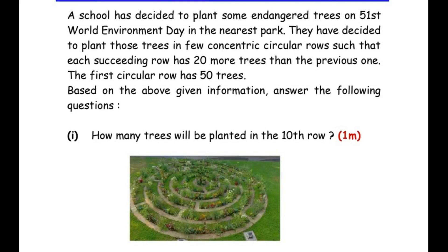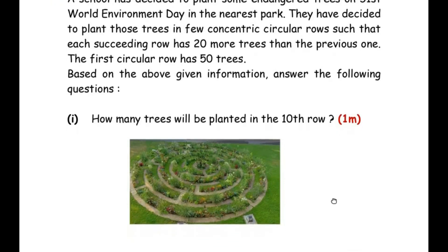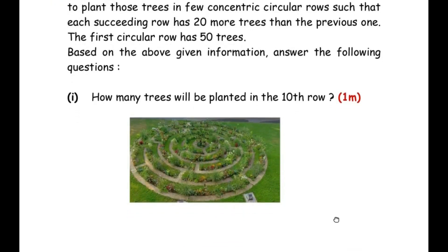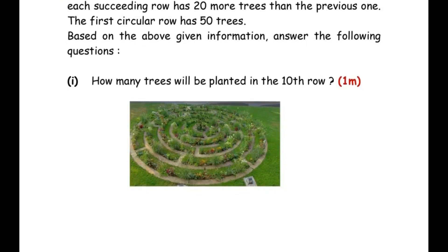The trees are planted in a concentric circular pattern: the first row has 50 trees, and each succeeding row has 20 more. So the second row has 70, the third row has 90, and so on. The sequence generated is: 50, 70, 90, 110, and so on.